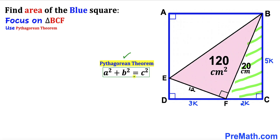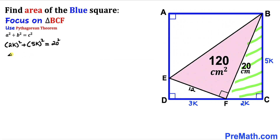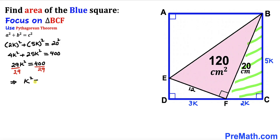Applying the Pythagorean theorem — A squared plus B squared equals C squared — with hypotenuse 20: (2K)² + (5K)² = 20². Simplifying: 4K² + 25K² = 400. Combining like terms: 29K² = 400. Dividing both sides by 29, K² equals 400 divided by 29.